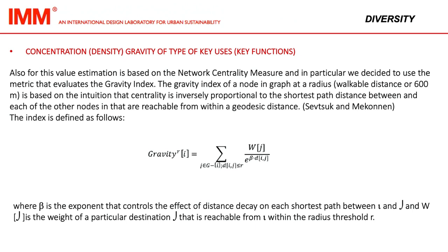Concentration gravity of type of key uses is also based on the network centrality measure. We decided to use the metric that evaluates the gravity index. The gravity index of a node in a graph at a walkable distance radius of 600 meters is based on the intuition that centrality is inversely proportional to the shortest path distance between each node and the other nodes reachable from within a geodesic distance. The index is defined as follows.